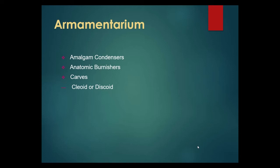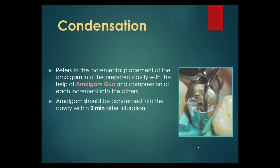Armamentarium required for amalgam restorations includes amalgam condensers, anatomic burnishers, carvers, and cleoid or discoid instruments. Condensation refers to the incremental placement of the amalgam into the prepared cavity with the help of an amalgam gun, also called an amalgam carrier, and compression of each increment into the other. Amalgam should be condensed into the cavity within 3 minutes after trituration.